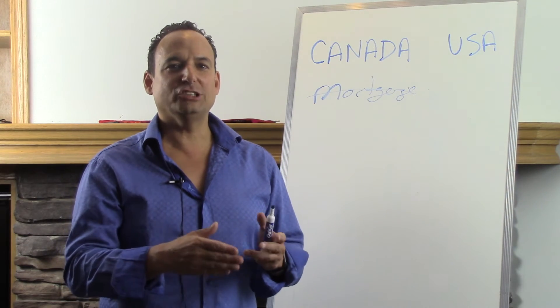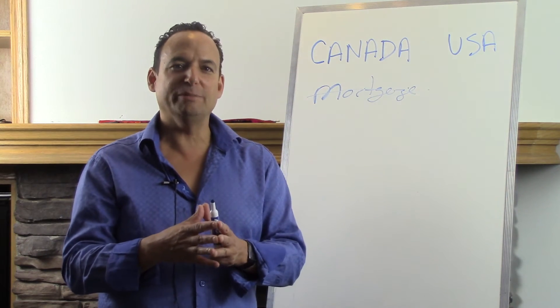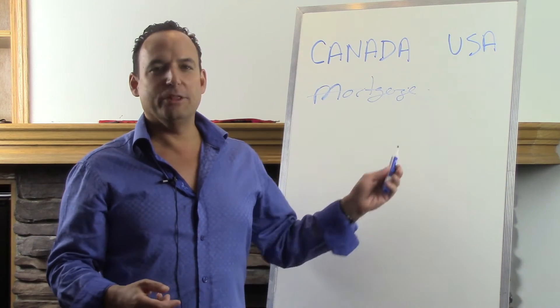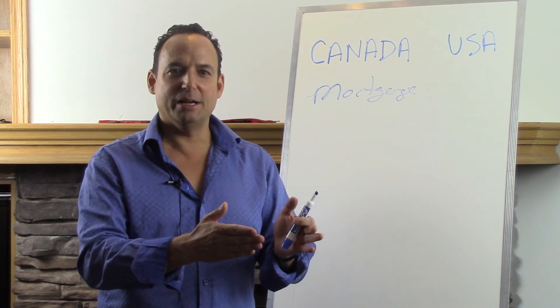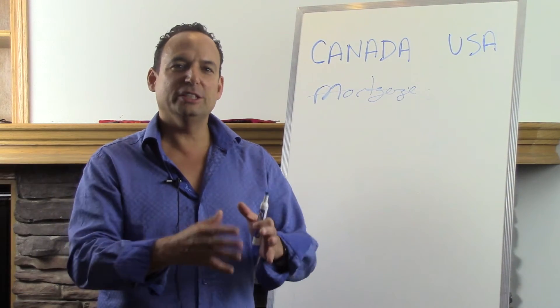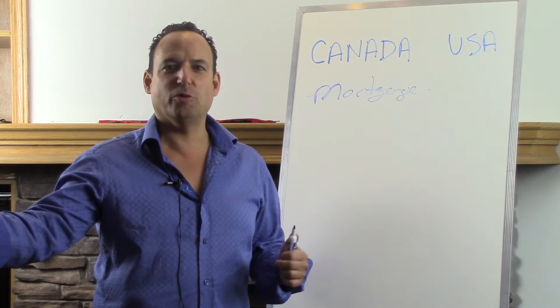Number two, a lot of times the banks are doing what's called selling notes. That means they're selling mortgages back and forth to each other. So maybe the loan originated with Bank of America. Bank of America sold it to Chase. Chase sold it to Wells Fargo. And this mortgage is transferred three or four different times.